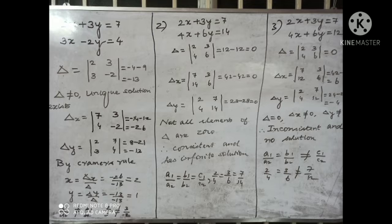Overlapping lines — when 2 lines overlap, there are many points of intersection, that is the infinite solution. In the graph with 2 parallel lines, the parallel lines do not touch or intersect, so there is no solution. That means the system is inconsistent. Thank you for watching this video on applications of matrices.